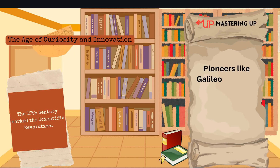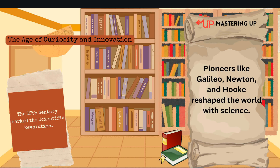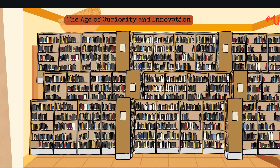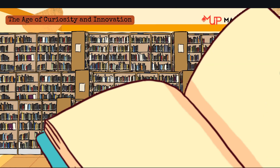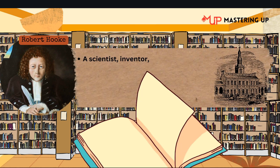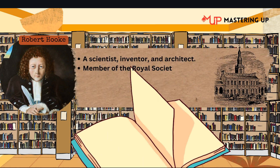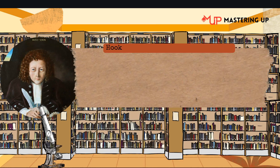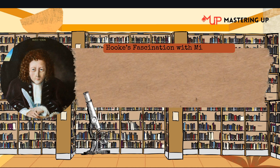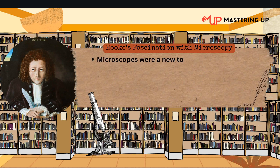The 17th century was a time of great scientific exploration. It was the age of the scientific revolution, with scientists like Isaac Newton, Galileo, and Robert Boyle making groundbreaking discoveries. In England, Robert Hooke was a rising star in the Royal Society, a group dedicated to advancing scientific knowledge. Hooke wasn't just a scientist — he was also an architect, inventor, and philosopher. He contributed to many fields from physics to engineering and even helped rebuild London after the Great Fire of 1666.